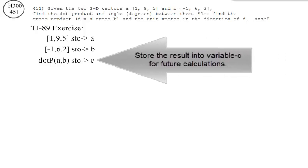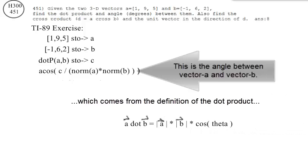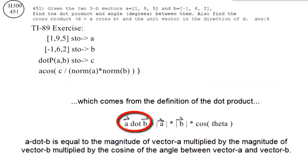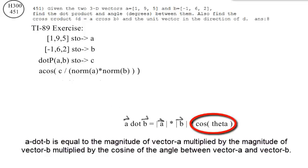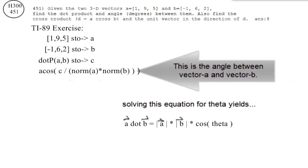Store the result into C for future calculations. This is the angle between Vector A and Vector B, which comes from the definition of the dot product. A dot B is equal to the magnitude of A multiplied by the magnitude of B multiplied by the cosine of the angle between vectors A and B. Solving this equation for theta yields the angle between vectors A and B.